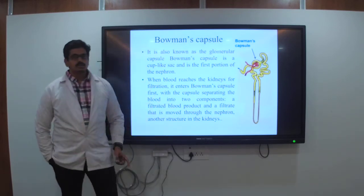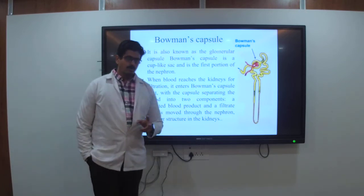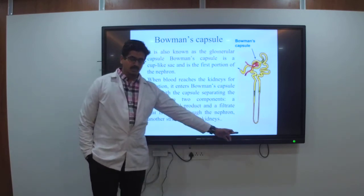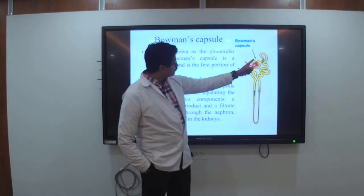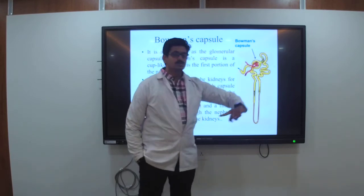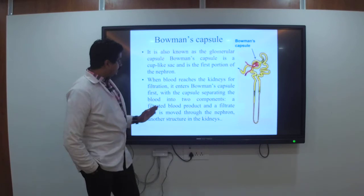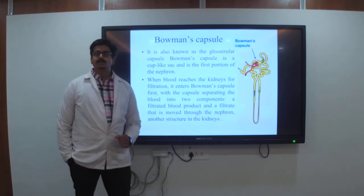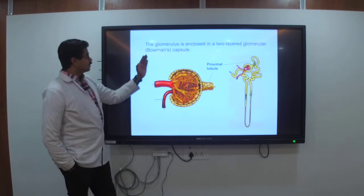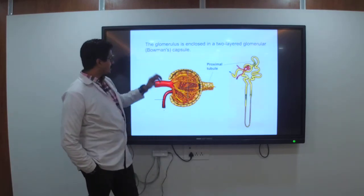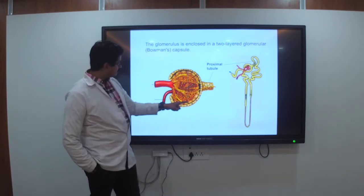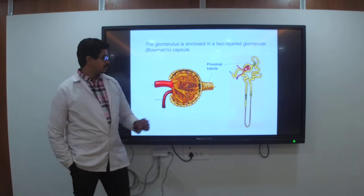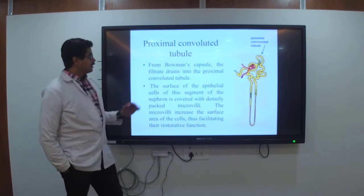The filtered blood product and filtrate move through the nephron. The glomerulus is enclosed in two layers — the Bowman's capsule — which contains the capillaries. The proximal convoluted tubule is next, attached to the cup-like structure of the Bowman's capsule.